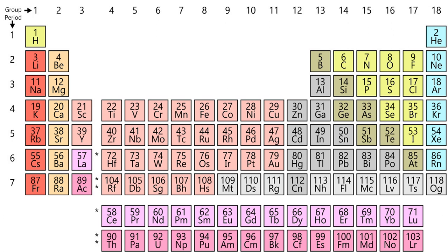Sulfur is a bright yellow moderately reactive solid with a density of 2.07 g/cc and is soft and brittle. It melts to a light yellow liquid at 95.3°C and boils at 444.6°C. It has an orthorhombic polyatomic crystalline structure and is brittle. Sulfur is an insulator with a band gap of 2.6 eV, and a photoconductor — its electrical conductivity increases a million-fold when illuminated. It has a moderate ionization energy (999.6 kJ/mol), moderate electron affinity (200 kJ/mol), and high electronegativity (2.58). The chemistry of sulfur is largely covalent in nature. The common oxide of sulfur, SO3, is strongly acidic.